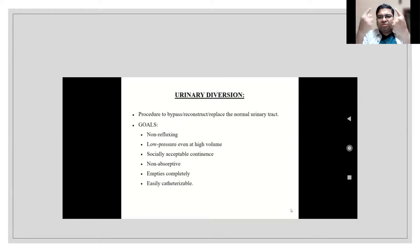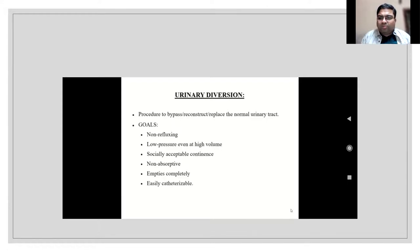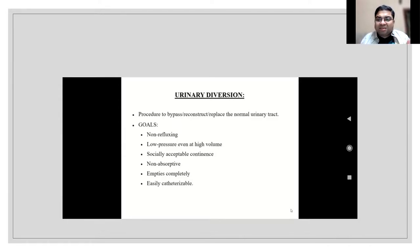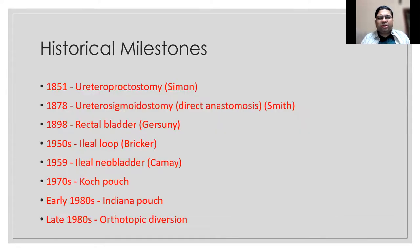If reflux occurs with infected urine containing intestinal mucus, it causes pyelonephritis and the patient can go into sepsis and die. Goals: non-refluxing, low pressure even at high volume, socially acceptable, non-absorptive (though that doesn't fully happen), easily catheterizable, and completely emptying. These are the criteria for an ideal urinary diversion.